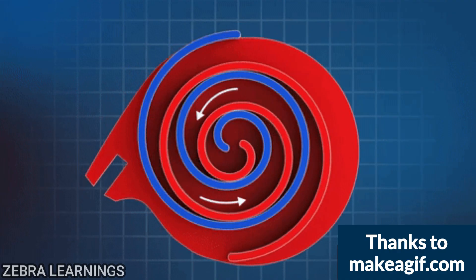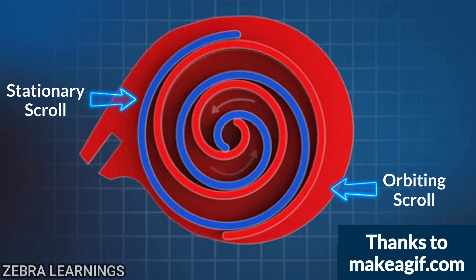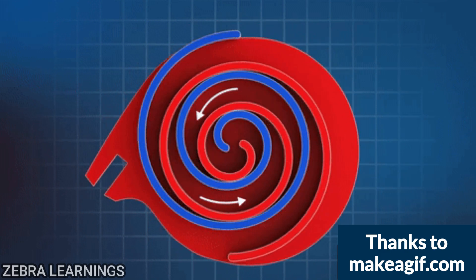A scroll compressor uses two spiral-shaped components called scrolls. One scroll stays stationary while the other orbits around it—not rotating, but moving in a circular motion. That's why it's called a scroll compressor.